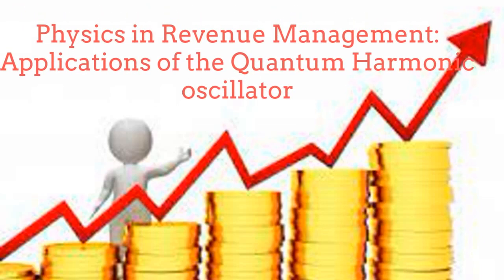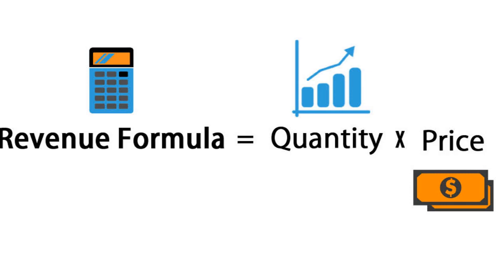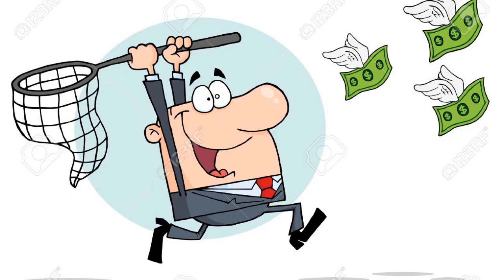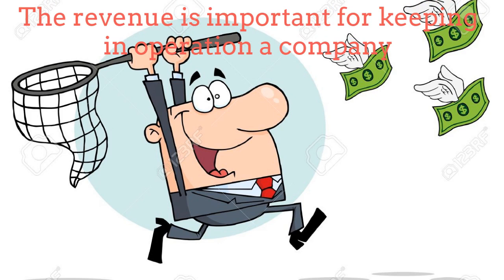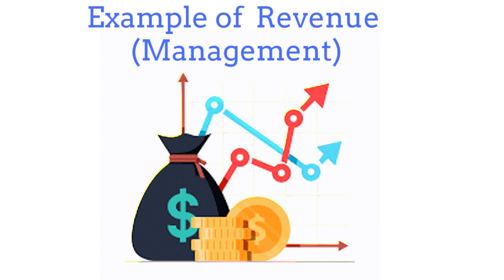In this episode we will talk about physics in revenue management — applications of the quantum harmonic oscillator. Revenue is in general the income of any organization. It is very important for the operation of a company, and for this reason all industries intend to increase revenue as much as possible. Let's make a basic example about revenue.